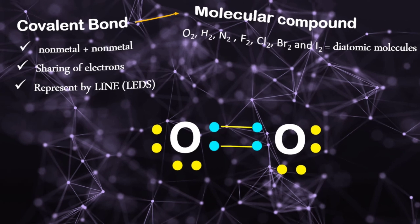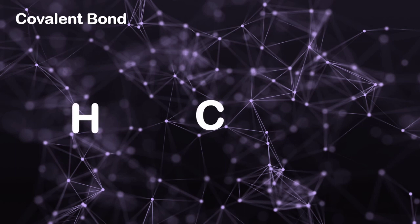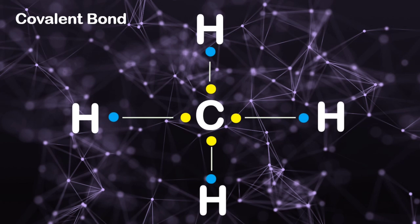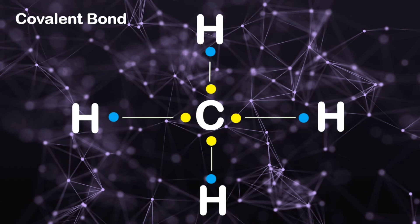Let's have another example: carbon and hydrogen. Carbon belongs to family 4A, so the valence electron of carbon is 4, represented by 4 dots. Hydrogen has 1 valence electron. Carbon needs 4 more electrons to become stable, while hydrogen needs 1 electron to fill the maximum number of the first energy level, which is 2. We need 4 hydrogen atoms for carbon to become stable. Counting the shared electrons around carbon: 1, 2, 3, 4, 5, 6, 7, and 8 — carbon is now stable. All 4 hydrogen atoms achieve stability by sharing their electrons with carbon.